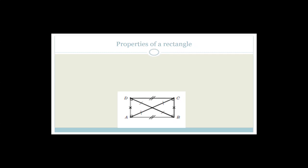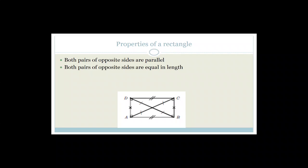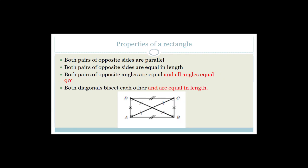Let's talk about the properties of a rectangle. Because it is a parallelogram, we know that both pairs of opposite sides are parallel, both pairs of opposite sides are equal in length, and both pairs of opposite angles are equal. What's new is that all angles are equal to 90 degrees. Also, both diagonals bisect each other — we knew that from parallelograms — but now they are also equal in length. That's new, and that's specific to rectangles.